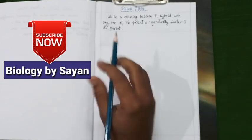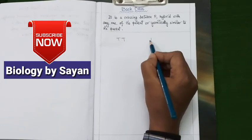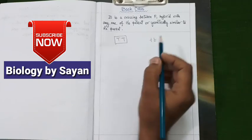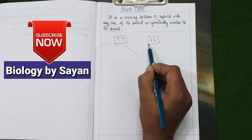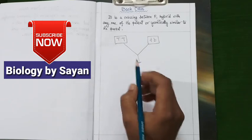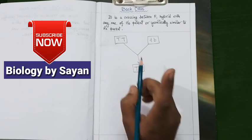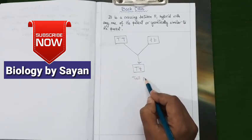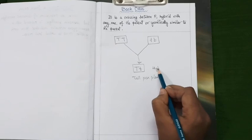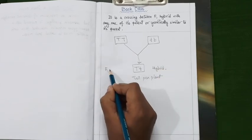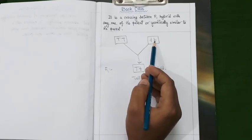Let's understand back cross with a simple example. We cross a homozygous dominant parent with a homozygous recessive parent. The resulting F1 hybrid individual will have the genotype capital T and small t — phenotypically a tall pea plant but genotypically a hybrid. So in the F1 generation we obtain hybrid offspring from both the homozygous dominant and homozygous recessive parents.